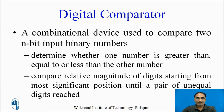So let us understand what is a comparator. A comparator is a combinational device which is used to compare two n-bit binary numbers, which determines whether one number is greater than, equal to, or less than the other number. It basically compares the relative magnitude of digital digits starting from the most significant position until a pair of unequal digits is received.